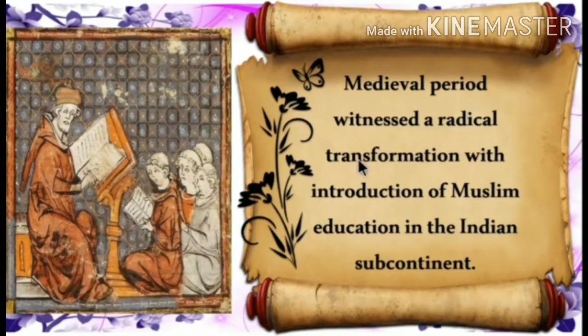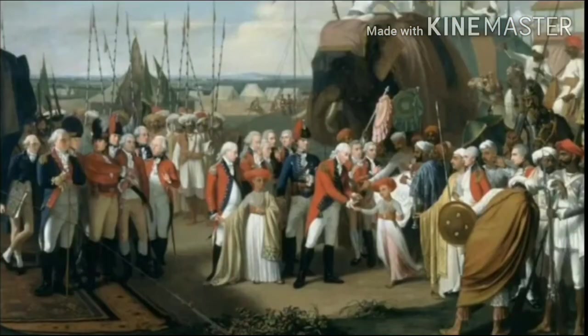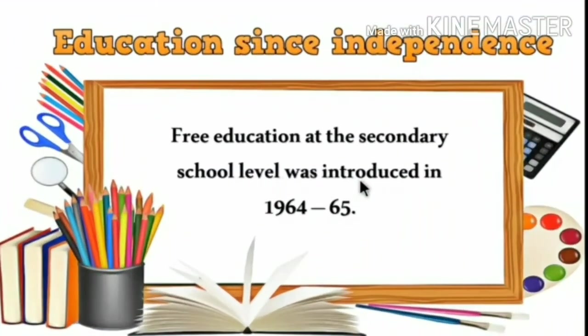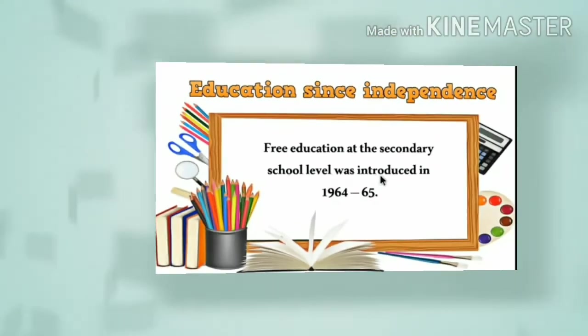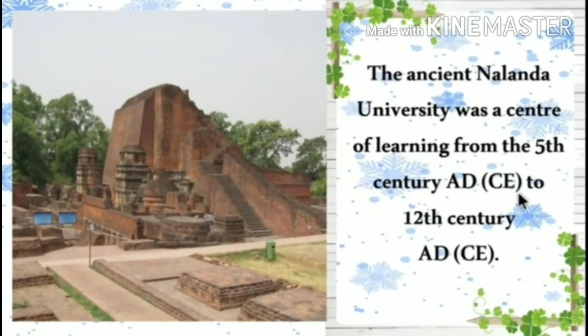Let's recall: the medieval period witnessed a radical transformation with the introduction of Muslim education. In the later medieval era, the British came to India and introduced English education. Free education at the secondary school level was introduced in 1964–1965. Nalanda, the oldest university in India, was located in Bihar.